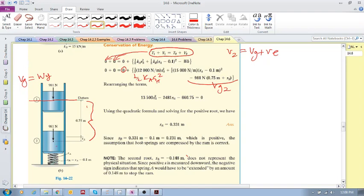Spring B is slightly different. It is half kb sb squared, the amount that spring B has been compressed. But the amount that B will be compressed is always...